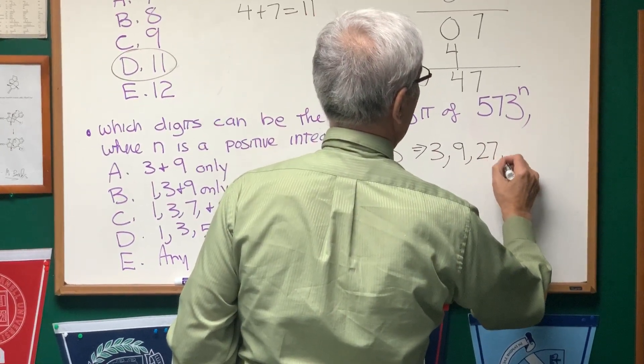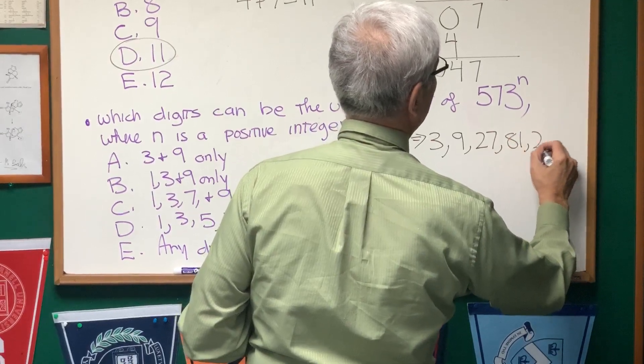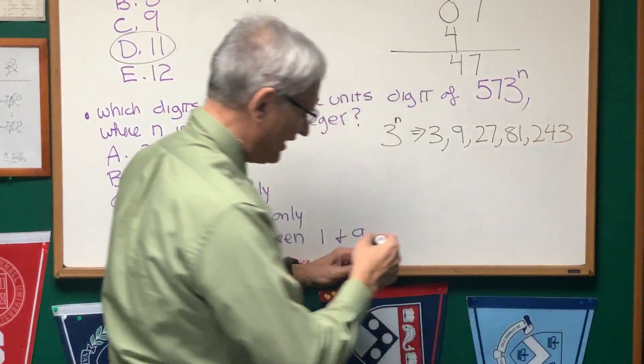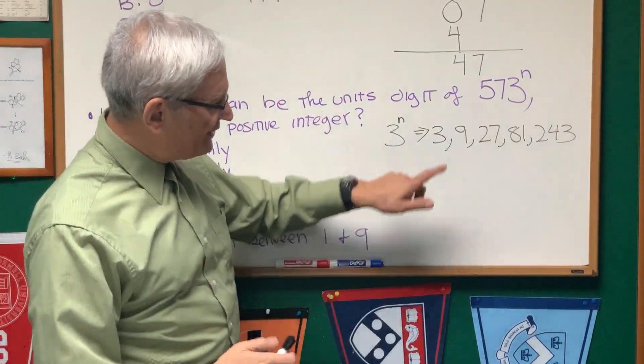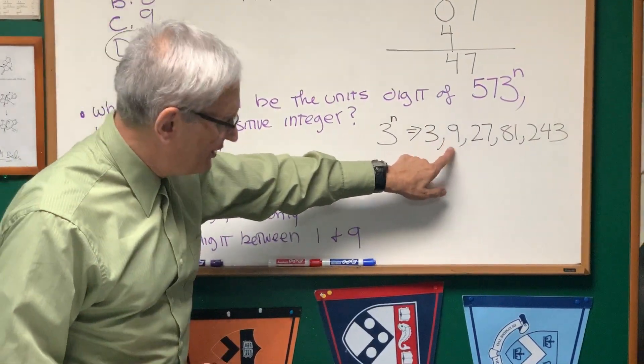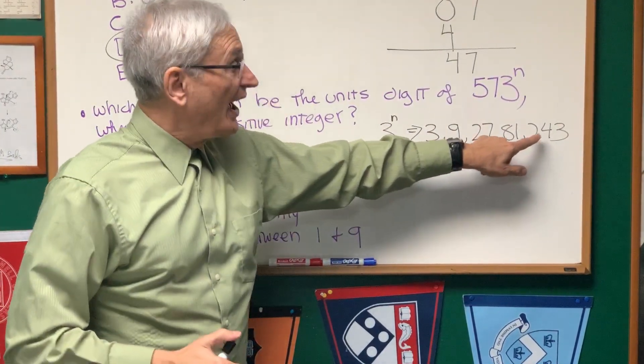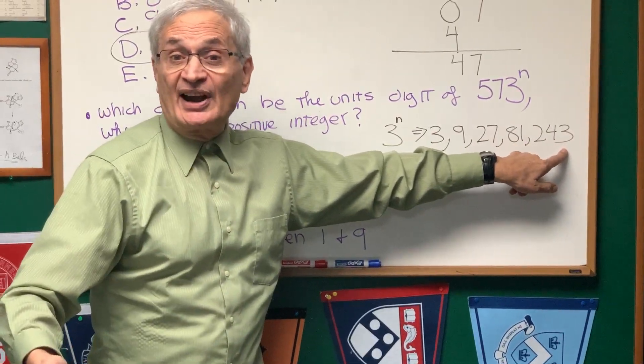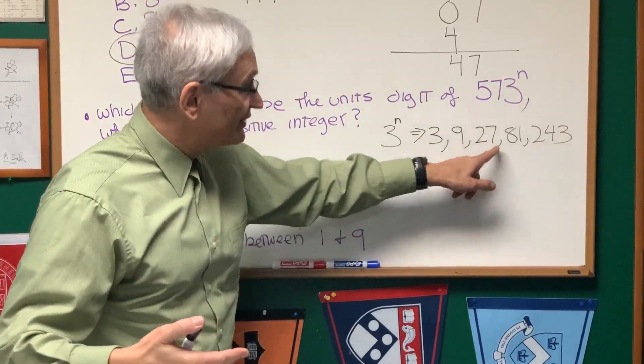The next power is twenty-seven, the next power is eighty-one, the next power is two forty-three, and if we pay attention we see that the units place cycles through three, nine, seven, one, and then it will start to cycle again through the same three, nine, seven, one.